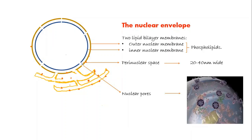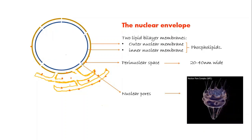The nuclear envelope is one of the aspects that distinguish eukaryotic cells from prokaryotic cells.